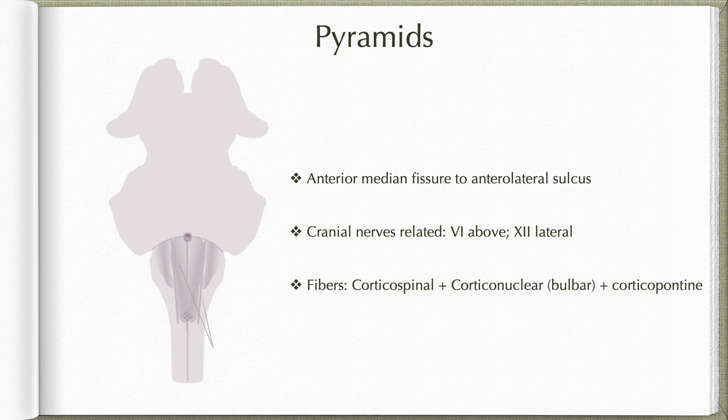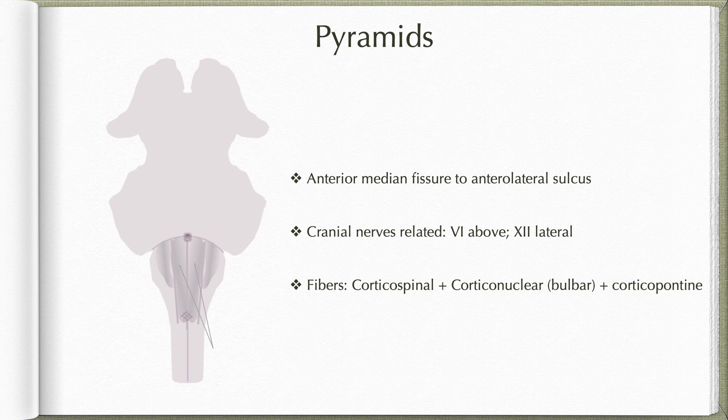Let us begin with the pyramids. Pyramids are two elongated swellings seen on the ventral aspect of the medulla, one on either side of the midline. Two cranial nerves are closely related to it: the abducens nerve, which exits above the pyramids at the level of the pontomedullary junction, and the 12th cranial nerve, the hypoglossal nerve, which exits lateral to the pyramids along the ventrolateral sulcus.